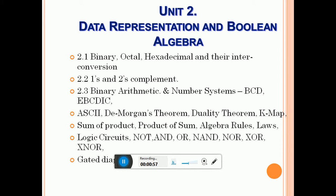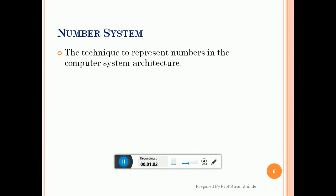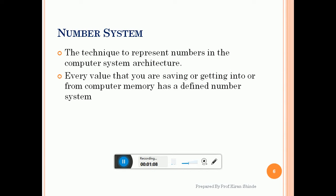Before we begin, let us first try to understand what a number system is. A number system is a technique used to represent numbers in the computer system architecture. Every value that you save or retrieve from computer memory has a defined number system. The typical number systems we know are binary, octal, decimal, and hexadecimal.